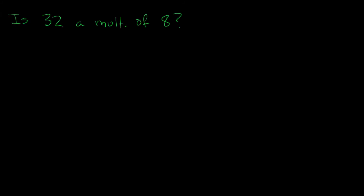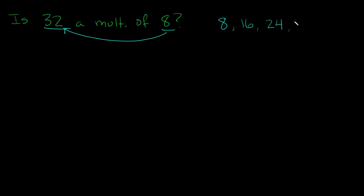What if I asked: is thirty-two a multiple of eight? Does eight go into thirty-two evenly? If I count by eights, will I land on thirty-two? Let's try: eight, sixteen, twenty-four, thirty-two. We landed right on thirty-two. So yes, thirty-two is a multiple of eight because when we counted by eight, we landed exactly on thirty-two.